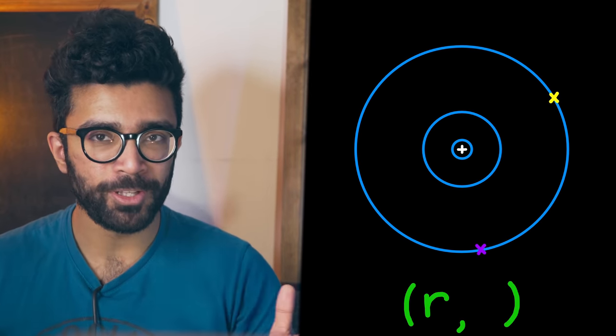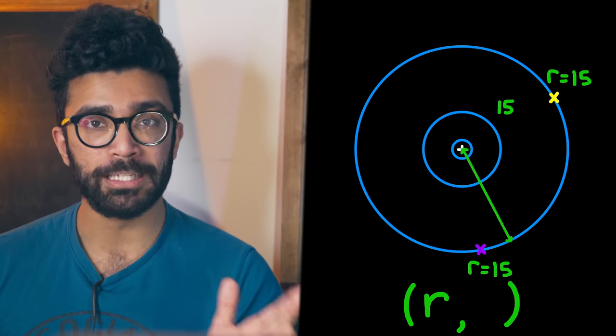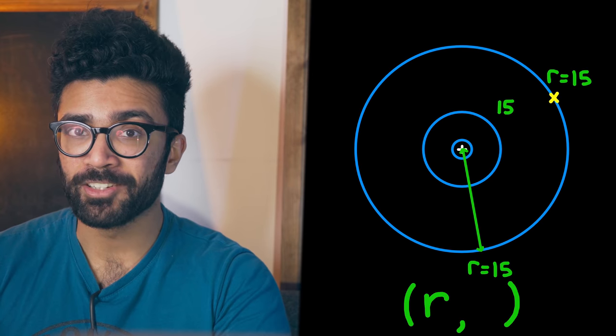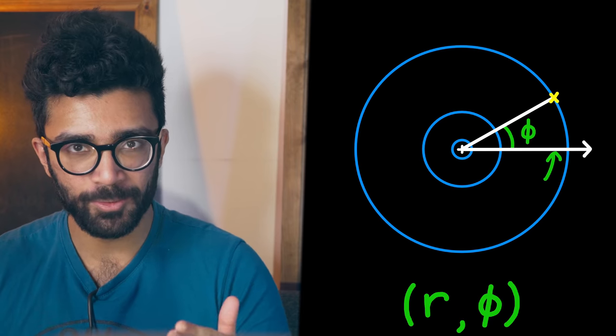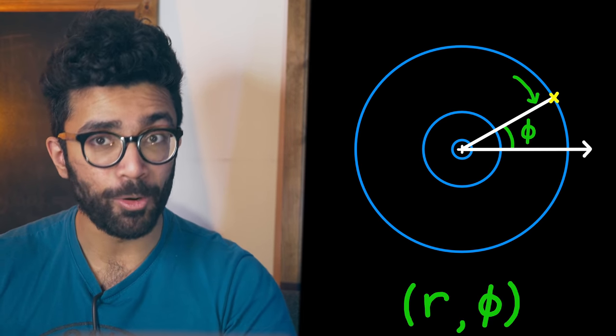This way, two points the same distance away from the origin will have the same r value, which will immediately be obvious. The second coordinate we're going to define is actually going to be an angle.